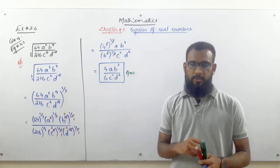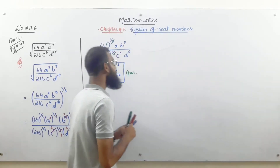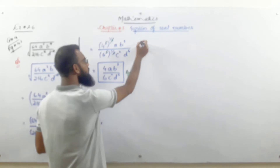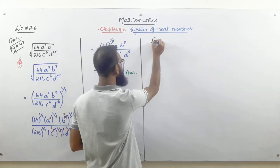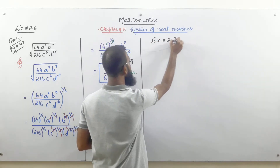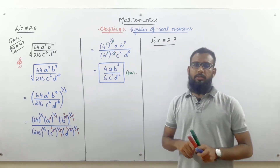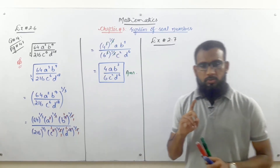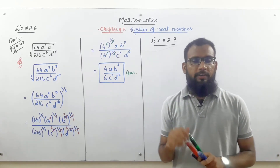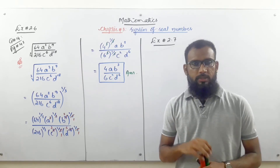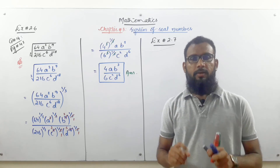Please copy exercise 2.7. We start exercise 2.7. We have already done question number 1 and question number 4 in previous classes. Now we move to question number 5. Question number 5 is the most important question of exercise 2.7, and 2.7 is a very important exercise overall.